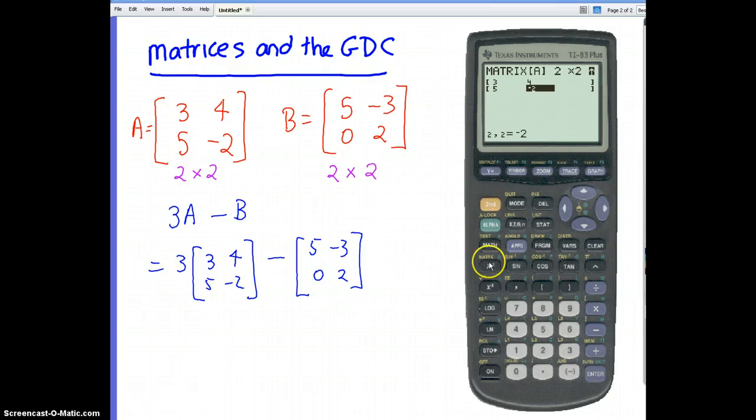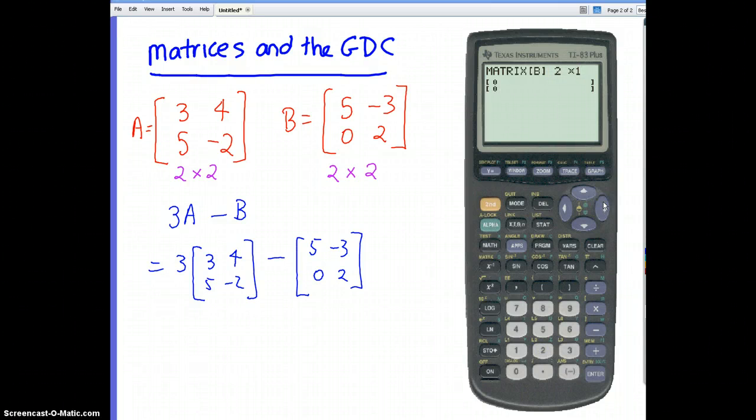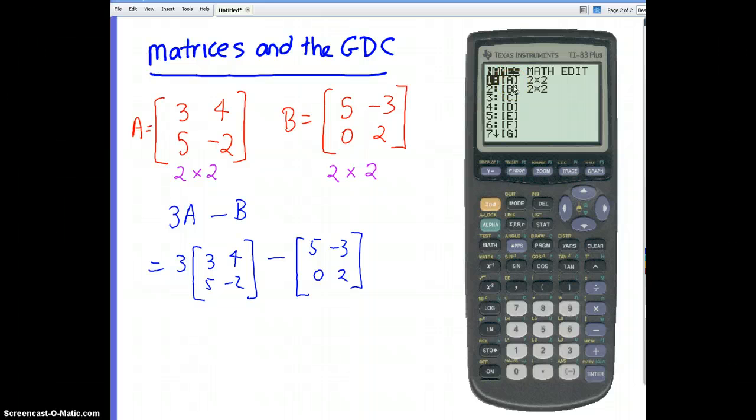Now I've got to go back into the matrix menu and let's edit and put in matrix B. Once again it says 1 by 1, we don't want that - we want a 2 by 2. Here are our four elements, so let's put those in: 5, -3, 0, and 2. Okay, so now if we go back to our matrix menu, you can see we've got our matrix A and our matrix B there. Now we're going to do some calculations with it.